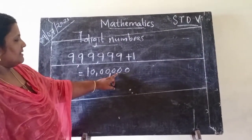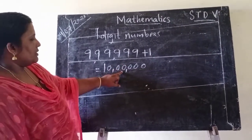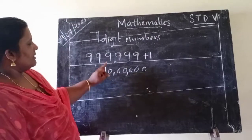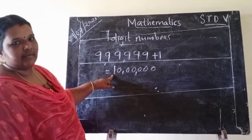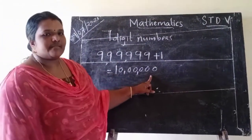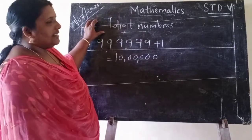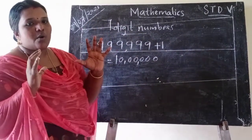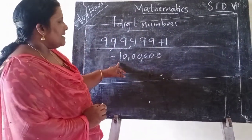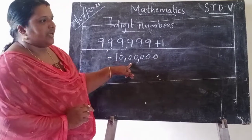1, 10, 100, 1000, 10,000, 1 lakh, 10 lakh. This number is 10 lakh. This is the 7-digit number. The smallest 7-digit number is 10 lakh.